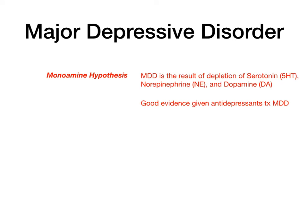In major depressive disorder there are a couple of hypotheses for why this occurs — and what I'm talking about is pathophysiology. The first hypothesis is known as the monoamine hypothesis, which basically says that MDD is the result of depletion of the monoamines.